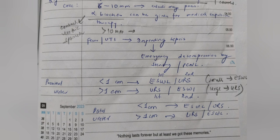If the stone is in proximal ureter less than 1 cm, then you will do ESWL. If it is more than 1 cm, then you will do URS. And same for distal ureter. That's all about the video. Thank you.